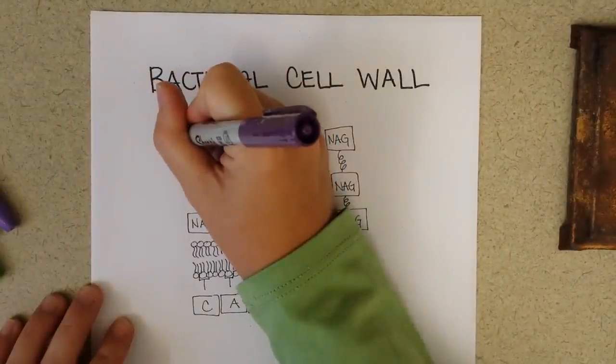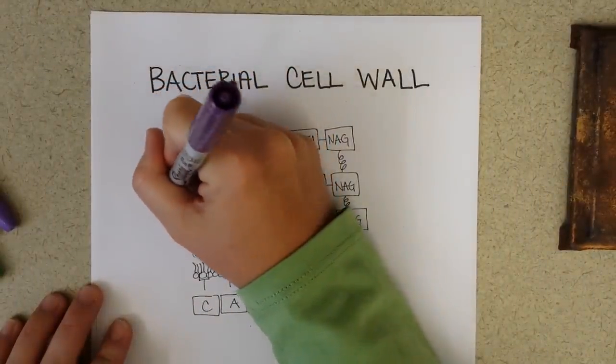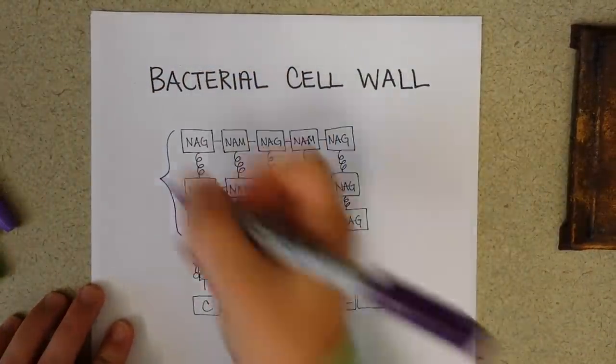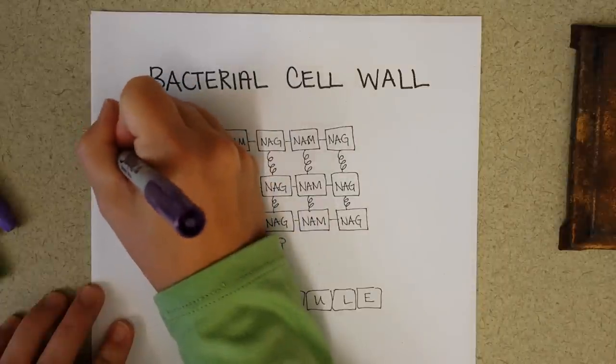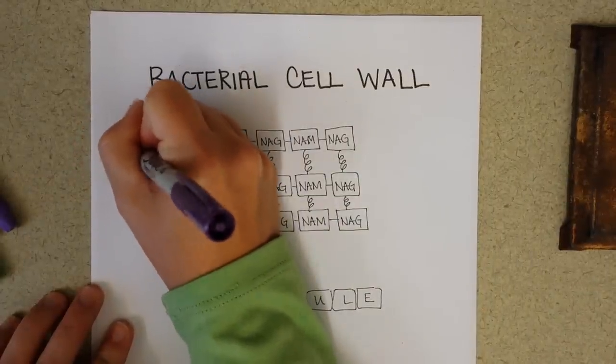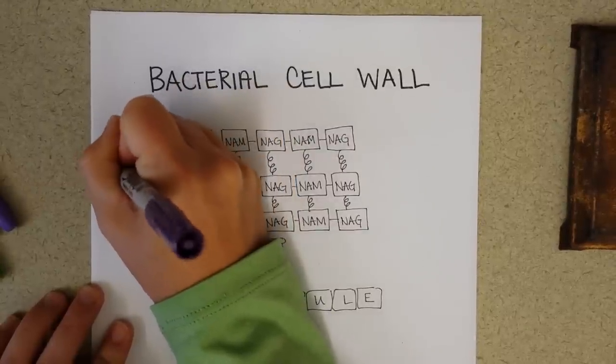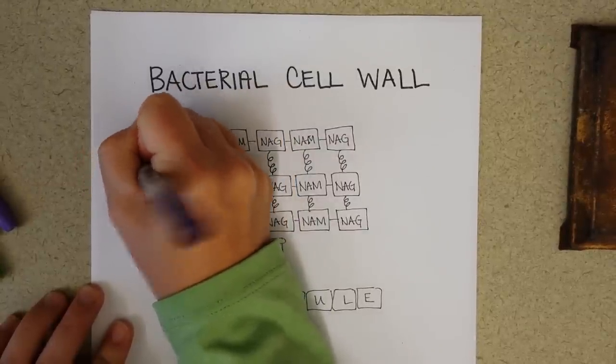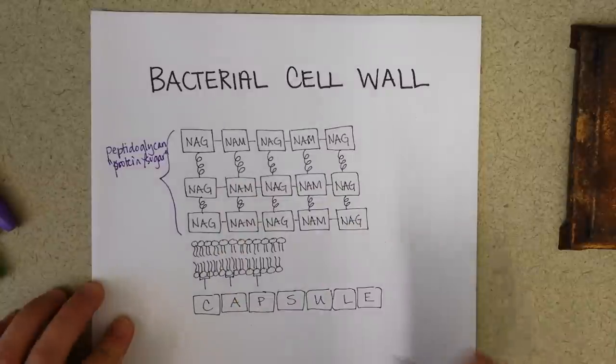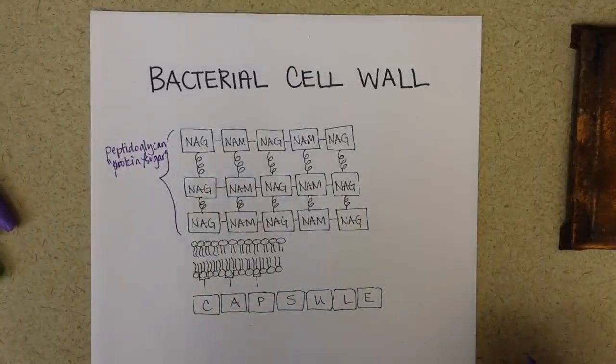And we're going to use a purple pen, just kind of highlight out here, or outline here. And this is the peptidoglycan layer. That means it has protein and sugar connections in this cell wall.